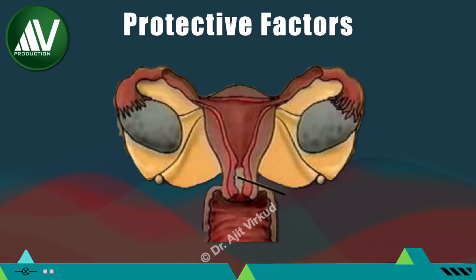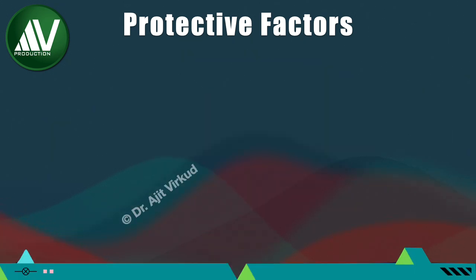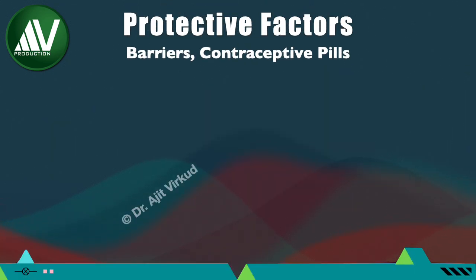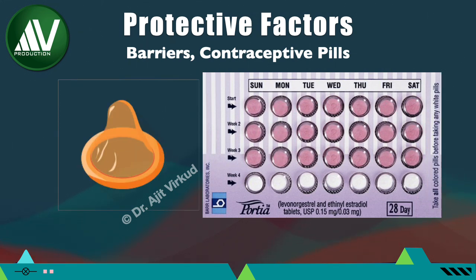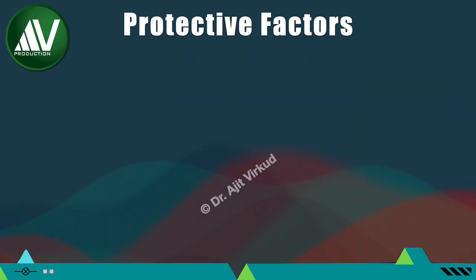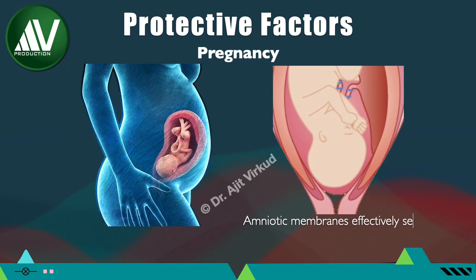Now I will talk about the protective factors which prevent development of pelvic inflammatory disease. These are cervical mucus, which acts as a mechanical barrier; barrier contraceptives, both male and female; and oral pills, which decrease the risk by 40–60%. The protection from oral pills is due to increase in viscosity of cervical mucus. Pregnancy also provides protection, as amniotic membranes effectively seal off the uterine cavity and tubes from ascending infection.